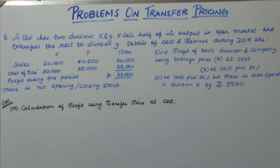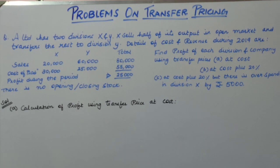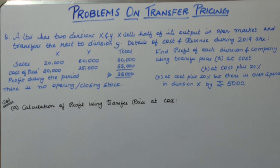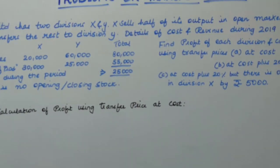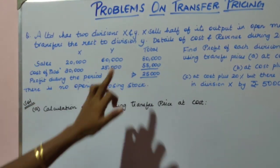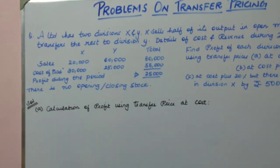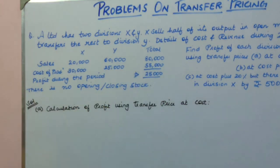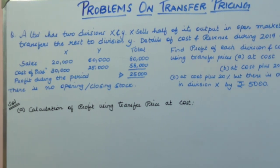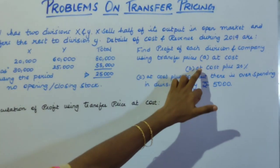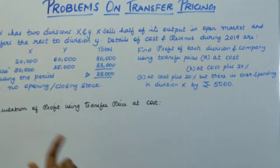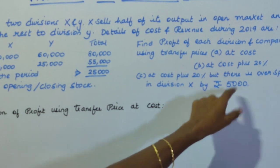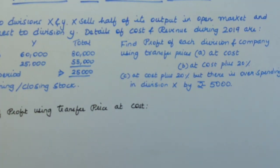A Limited has two divisions, X and Y. X is selling half of its output to Y and half of its output in the open market. The details of cost and revenue are given: X's sales is 20,000, Y is 60,000, and the company total is 80,000. The cost of production for X is 30,000, Y is 35,000. The profit for the company is 25,000, and there is no opening or closing stock. You are asked to find profit under three conditions: transfer pricing at cost, at cost plus 20%, and at cost plus 20% but with overspending in division X by 5,000.